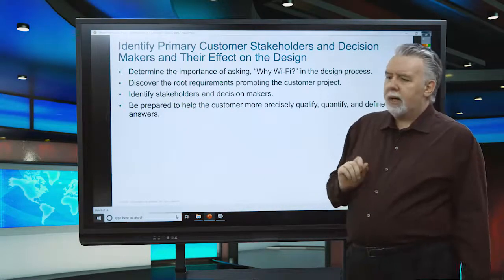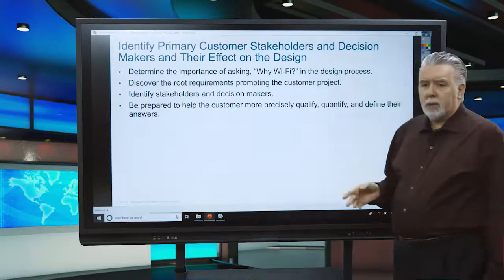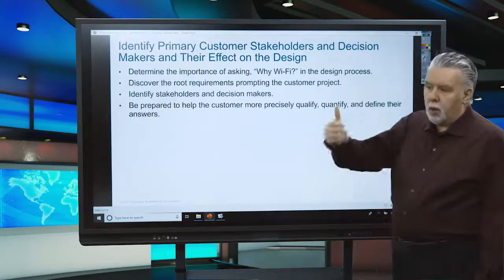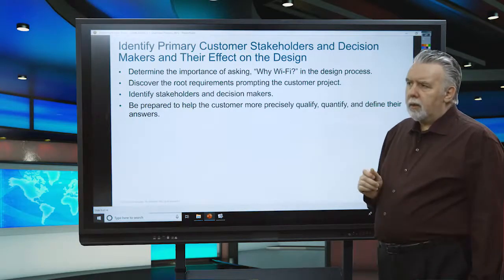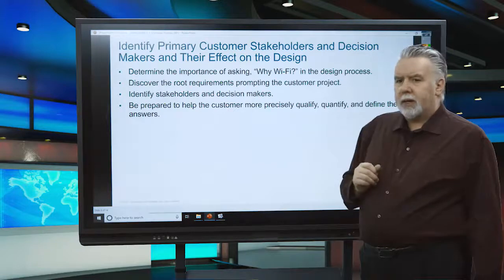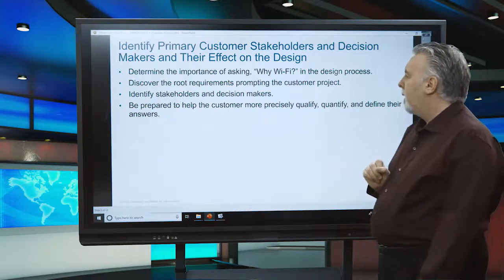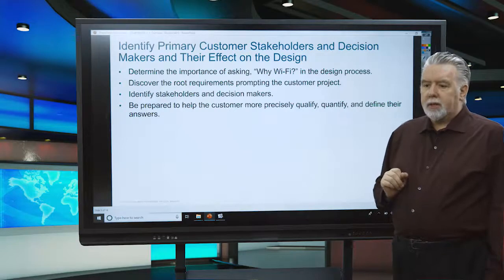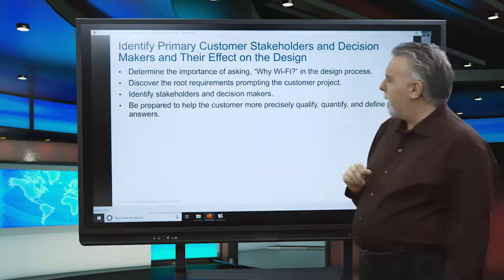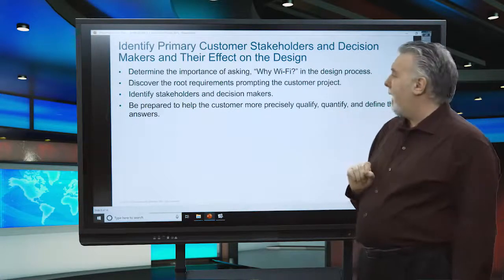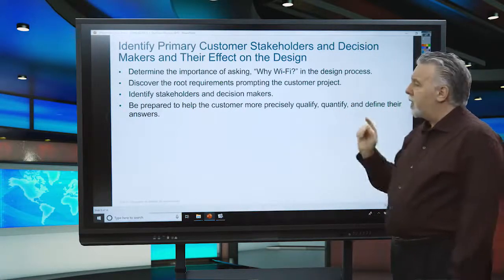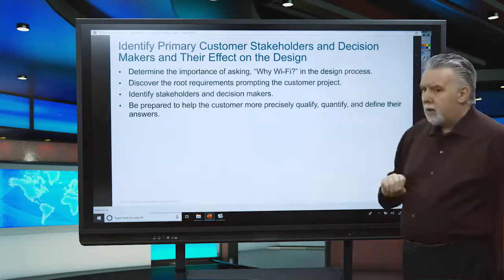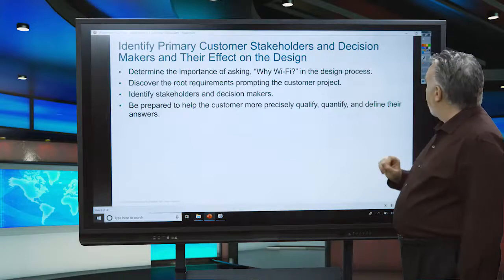Identify the stakeholders — anybody who has an interest. For example, in a warehouse, the sales VP may have a strong interest in how the warehouse performs. Salespeople may want to walk the warehouse on their mobile phones, connected via a Bluetooth headset, to check whether an expensive item is in stock for a customer. The VP of sales is very interested in that because it's a sales function — and you may not have considered that the sales team has any interest in how you design the Wi-Fi in the warehouse. This is a very important point to identify at the start of the design.